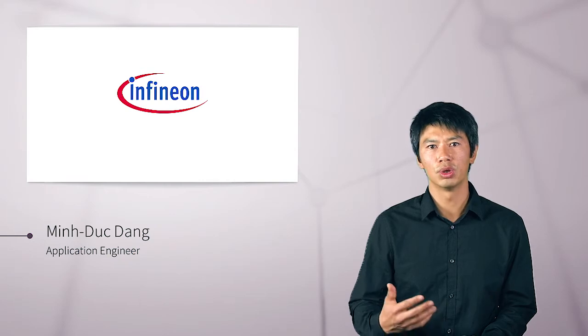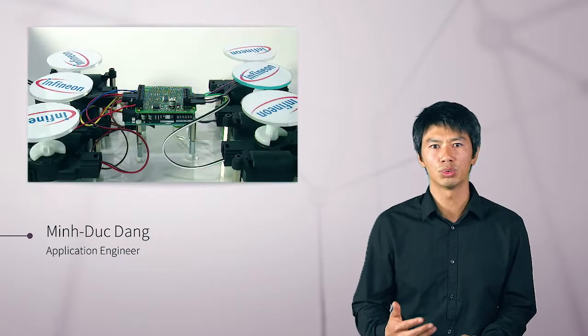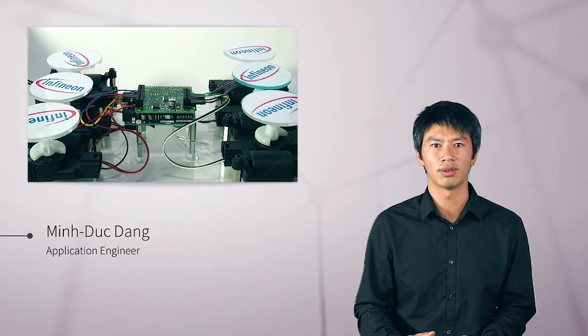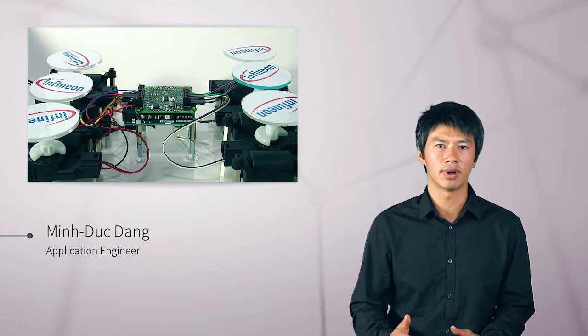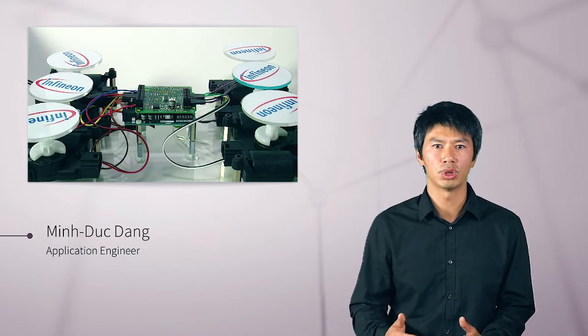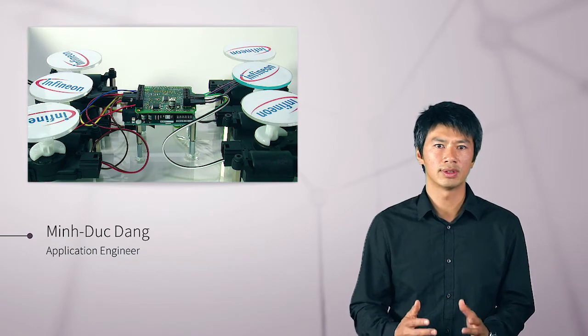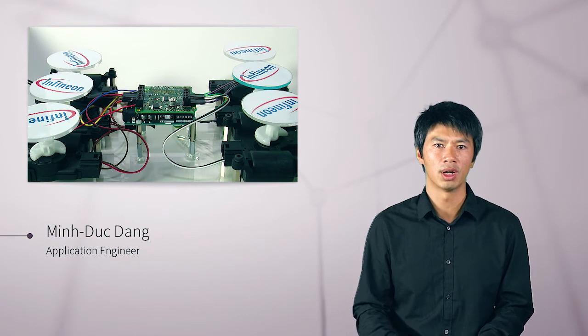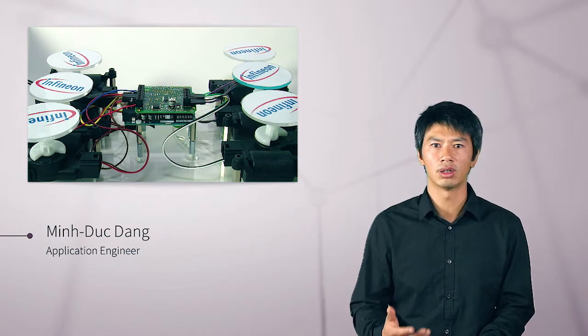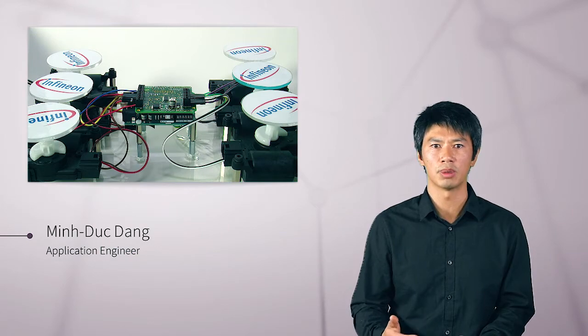I would like to show you a solution with the new Arduino shield with the TLE94112. The TLE94112 is the very first device on the market integrating 12 half bridges able to control six DC motors in any direction independently from each other. This device can drive currents up to 900 mAh.